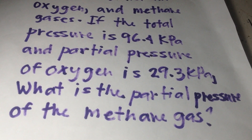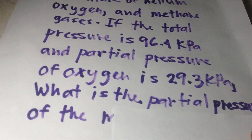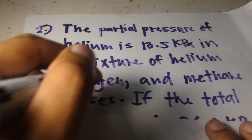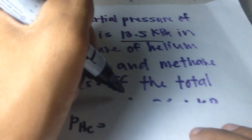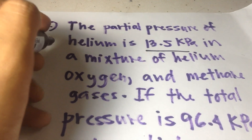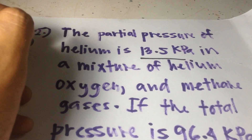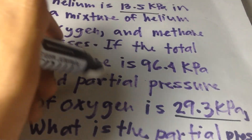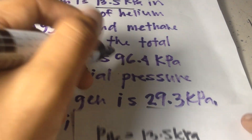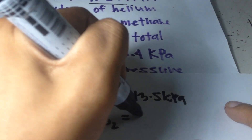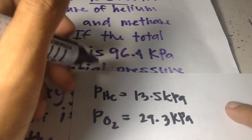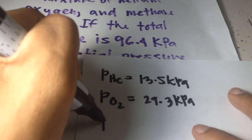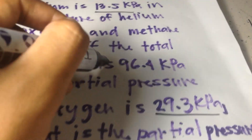So, the partial pressure of methane gas is the unknown. Let's solve this. We have P helium equals 13.5 kPa, P oxygen equals 29.3 kPa, and P total equals 96.4 kPa.